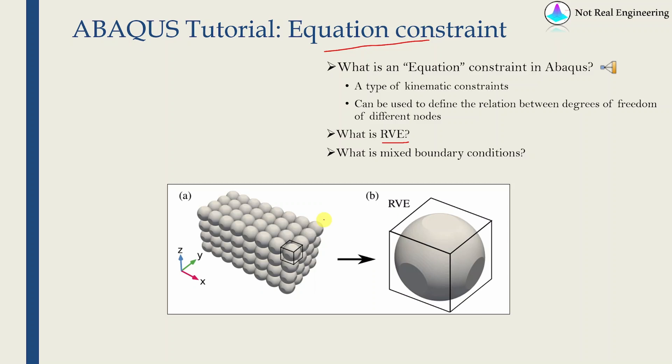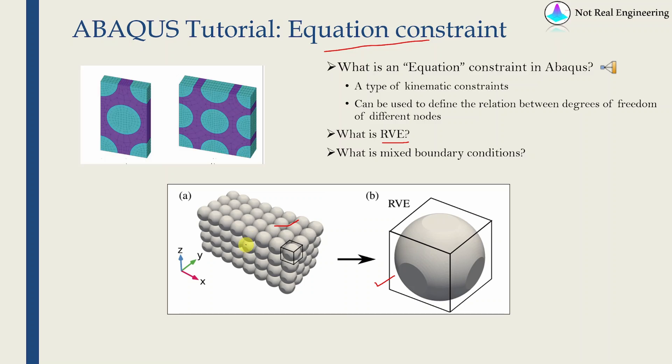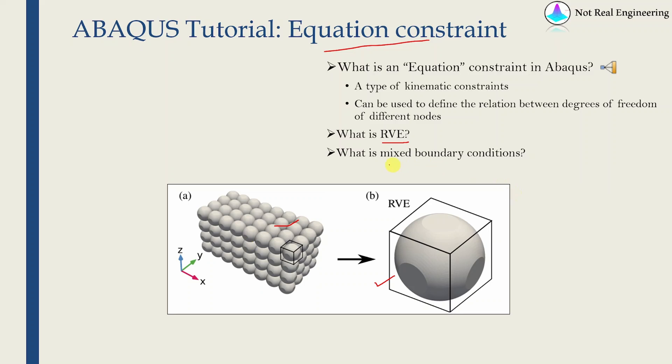Now the obvious question would be what is RVE? RVE means representative volume element. If we have some structure which is periodic in nature then a small part of that structure can be used to represent the entire structure. As you can see in this example we can create this entire structure just by repeating this small cube into specific region. That's why this is called RVE of this entire structure. This is used in many cases especially modeling of composite materials where we don't model full composite part but we take a small section of that part which is called representative volume element of that composite and then we simulate just that RVE. And while simulating that RVE we use something called mixed boundary conditions during which this equation constraint comes handy.